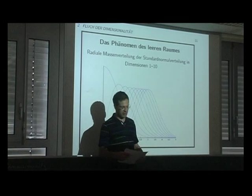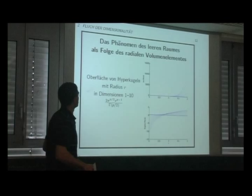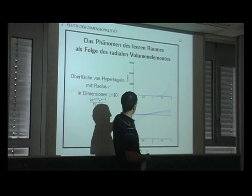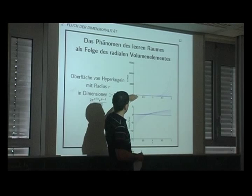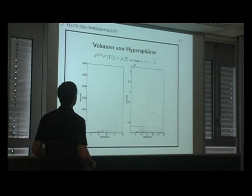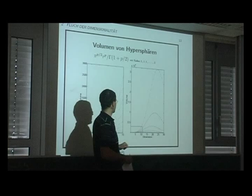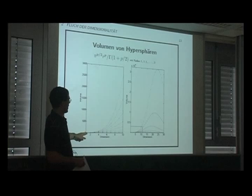I have plots of these volume elements — the radial volume elements for different dimensions as a function of radius, including a logarithmic plot. I've also included a plot of hyperspheres. For a given radius, the volume of a hypersphere increases as you increase the dimensionality; however, beyond some point it starts to decrease again.